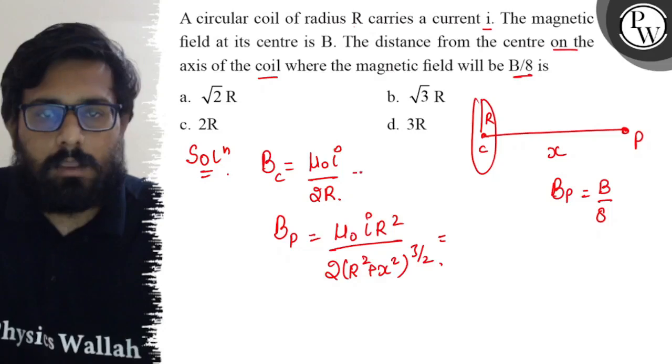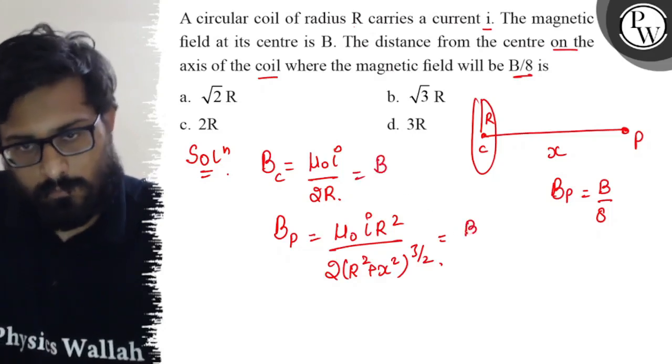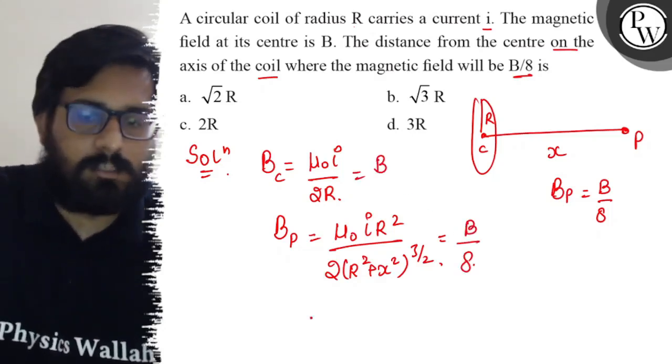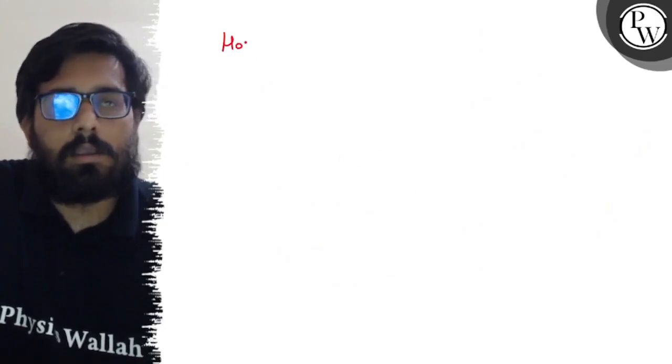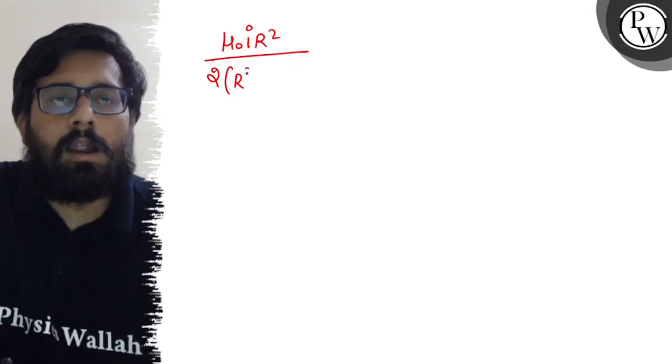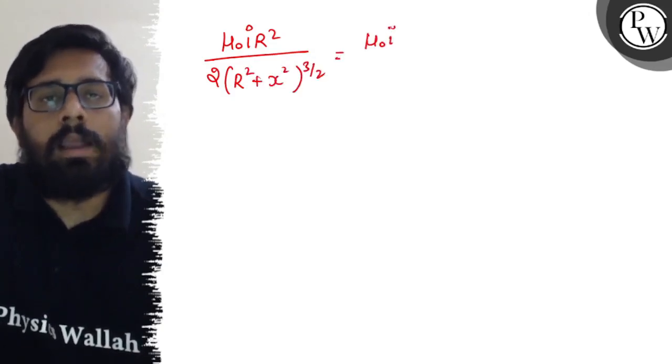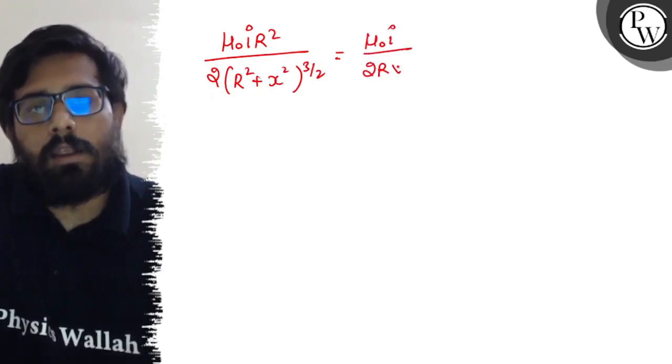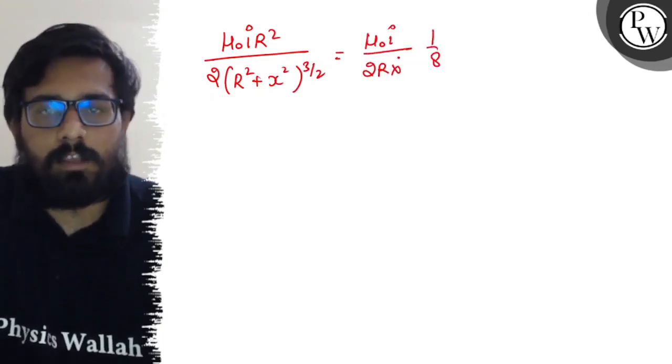So B_P is actually B by 8. So μ₀iR² upon 2(R² + x²)^(3/2) is equal to μ₀i upon 2R times 1 by 8.